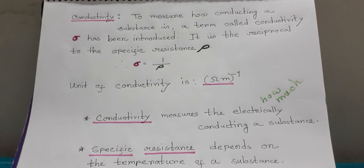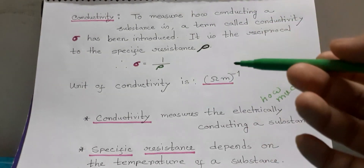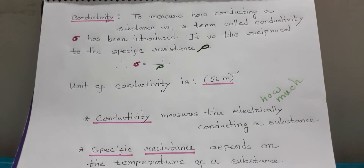Due to conductivity, we know that there are basically two types of matter: one is conductor and another is non-conductor. A third type is semiconductor, which changes its characteristics — that means its resistance changes due to the application of temperature. So through conductivity we know there are basically two types, with semiconductor as a third added type. Conductivity measures the electrical conducting ability of a substance.